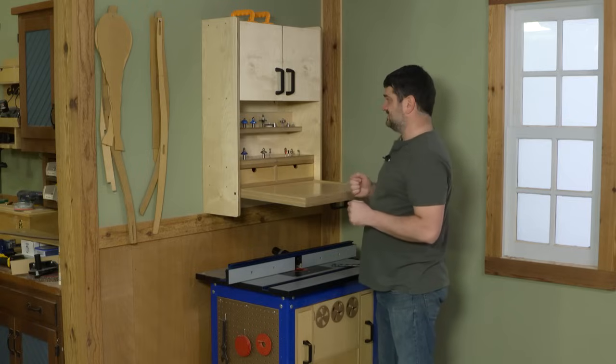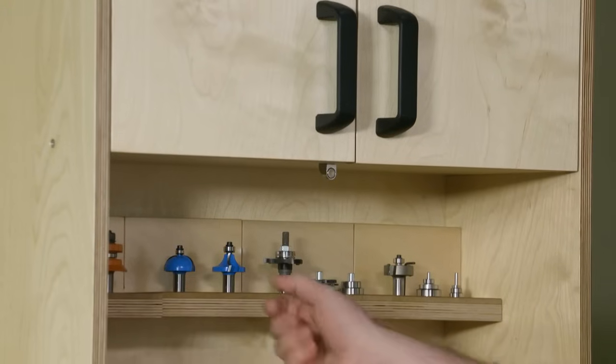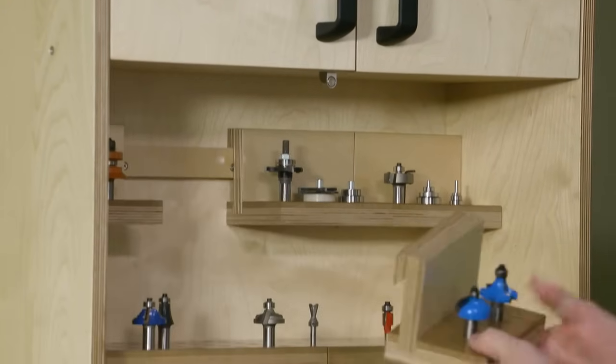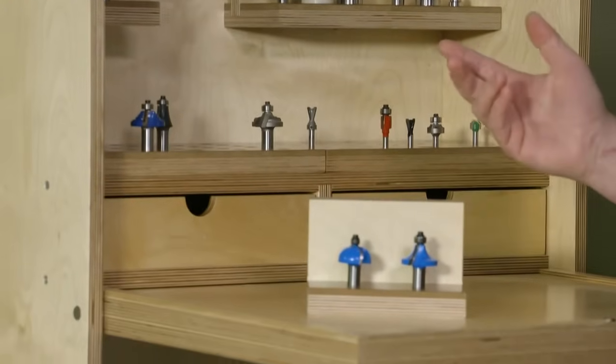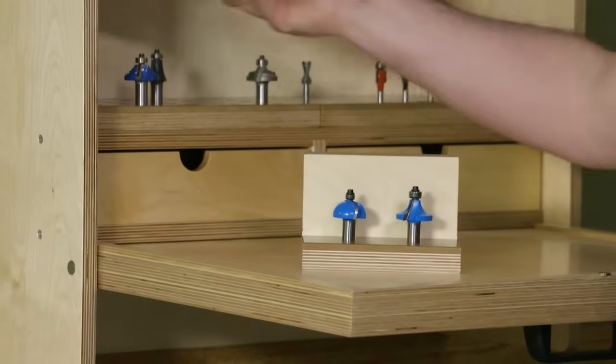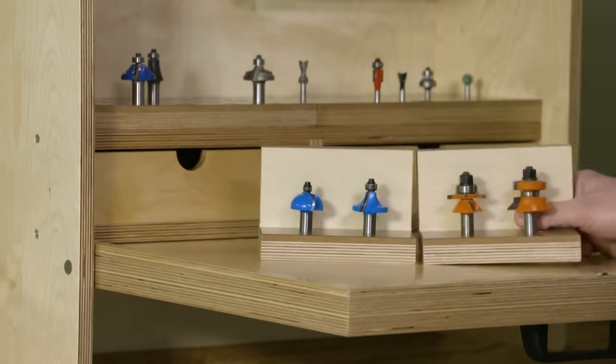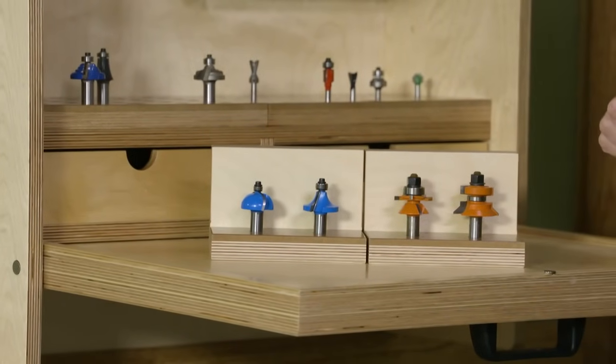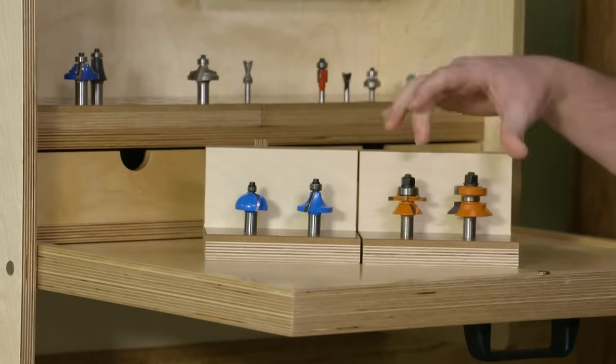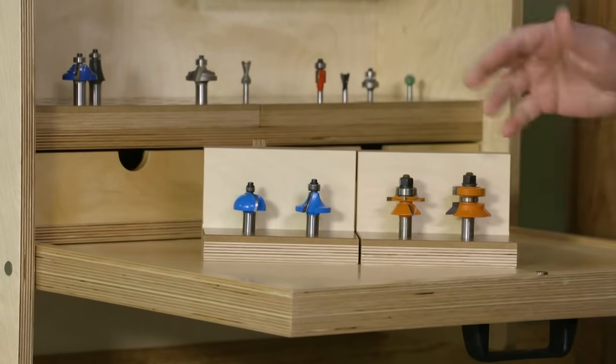Those keep track of all my random single bits, but for my sets of bits—like this one's for drop leaf construction, and then I have another set of bits that's for cope and stick, or style and rail you might call it—it just keeps those together so I'm not putting those in with other random bits and then trying to mix and match later.